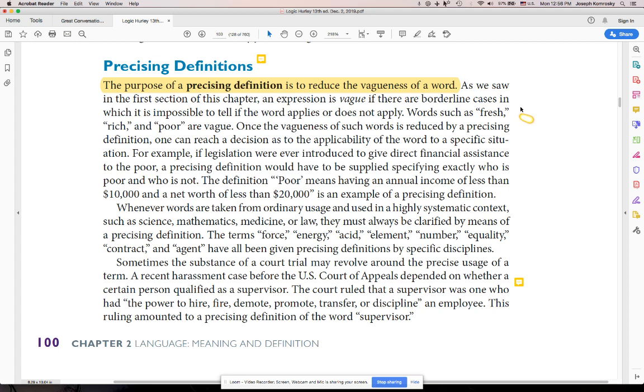As we saw in the first section of this chapter, an expression is vague if there's a borderline case in which it's impossible to tell if the word applies or does not apply. It seems like the borders of that word, how you define it, are a little blurry. So precising definitions come along and say, let's make it unblurry. Let's give more details to where we definitely let you know exactly what we're talking about.